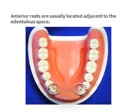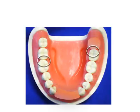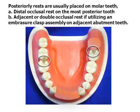Anterior rests are usually located adjacent to the edentulous space if the cuspids are present. If the cuspids are not present, one should consider the restoration as a tooth-tissue supported partial denture. Posteriorly, rests are usually placed on molar teeth. If using the terminal abutment, a distal occlusal rest is used. Adjacent or double occlusal rests are used if utilizing an embrasure clasp assembly on adjacent abutment teeth.